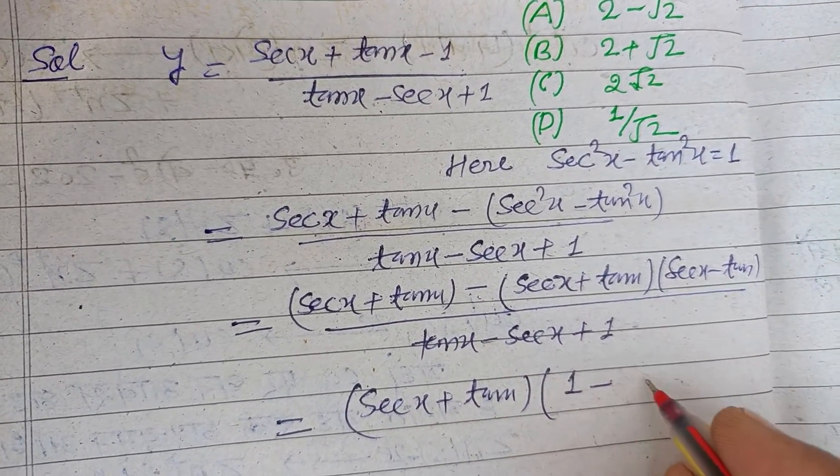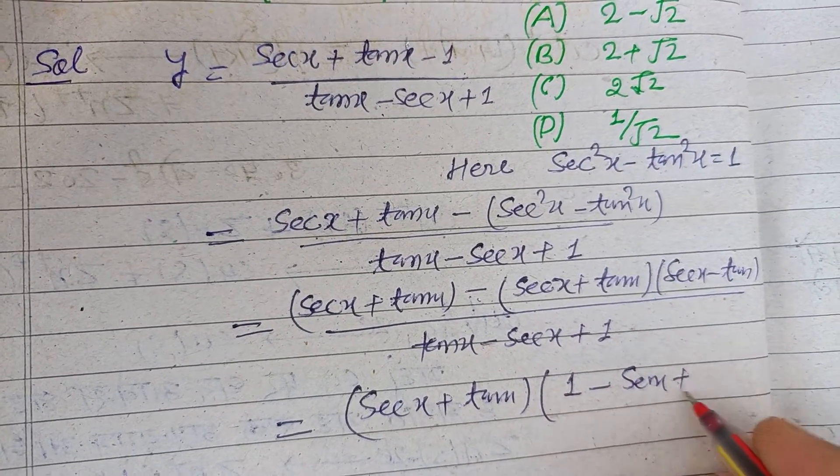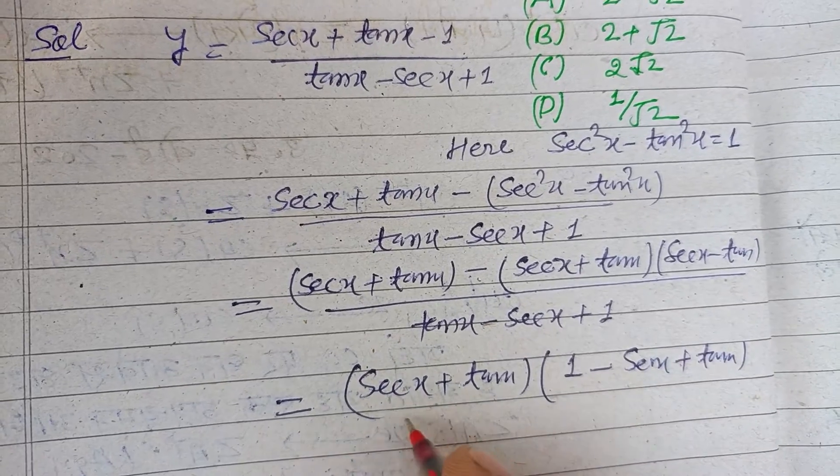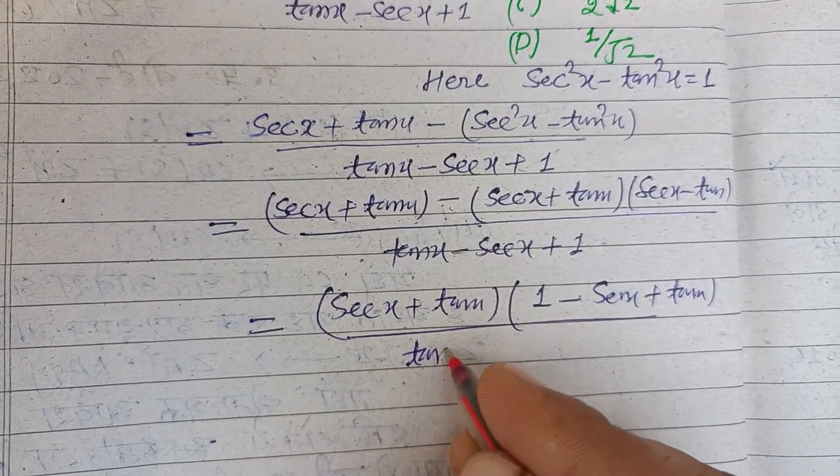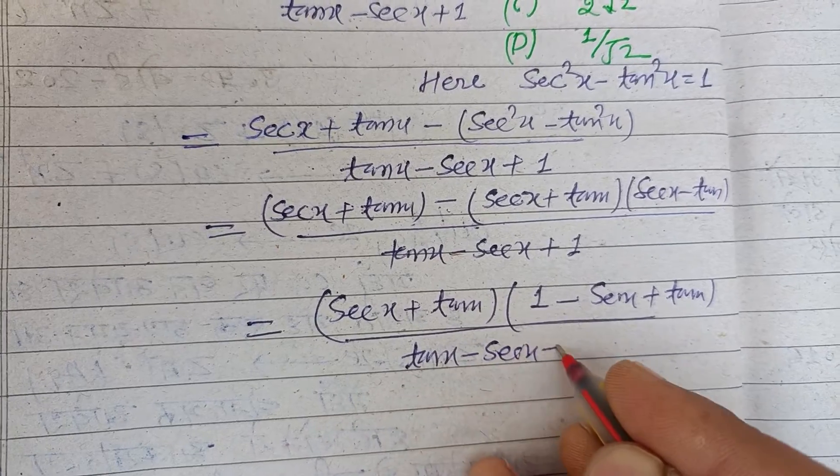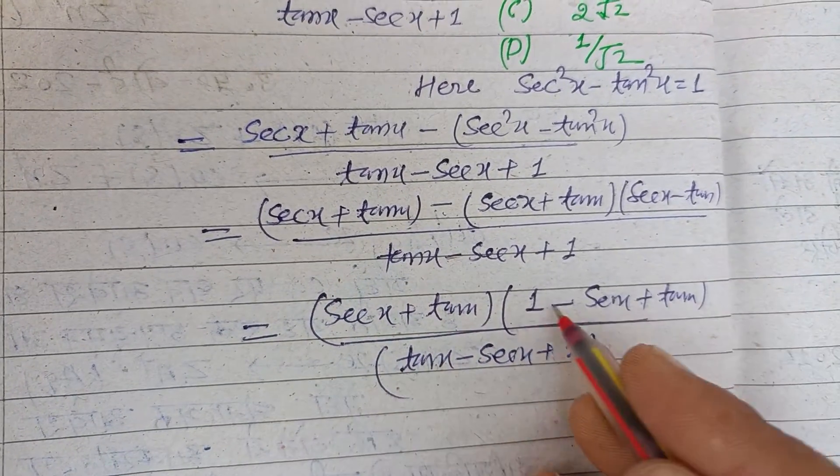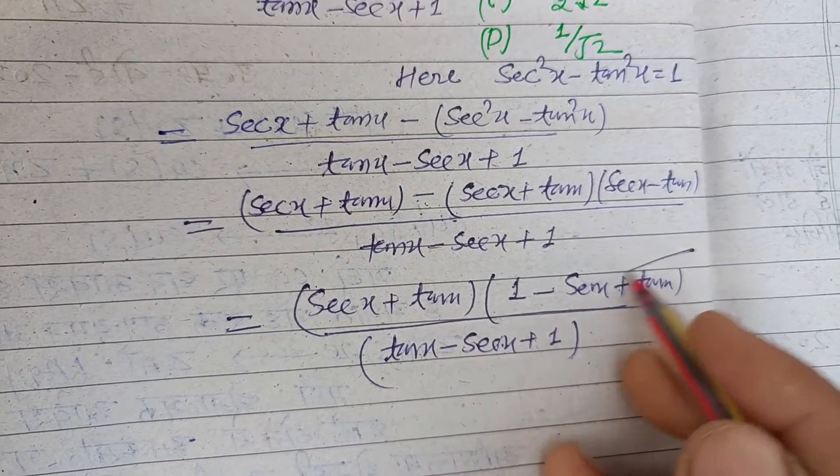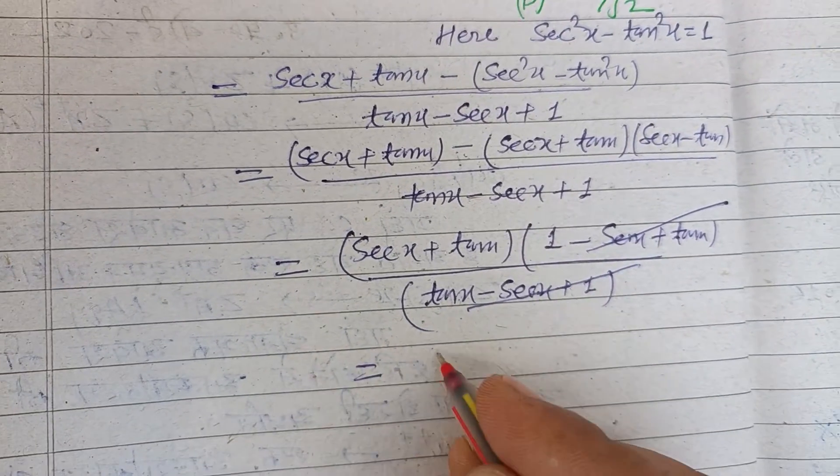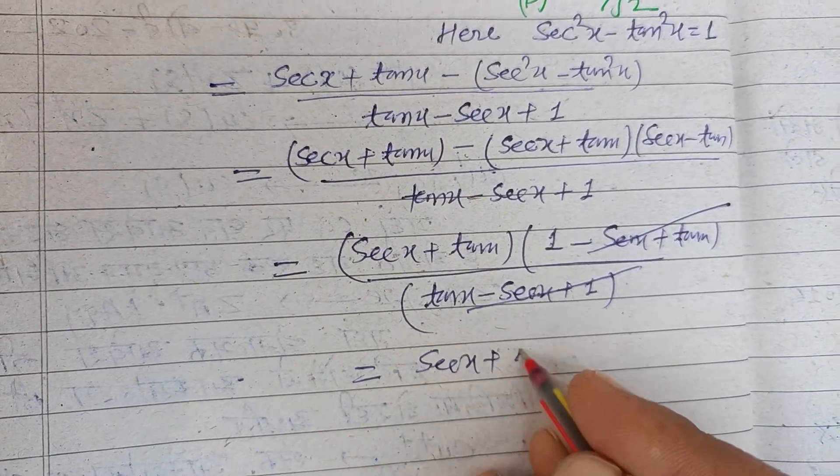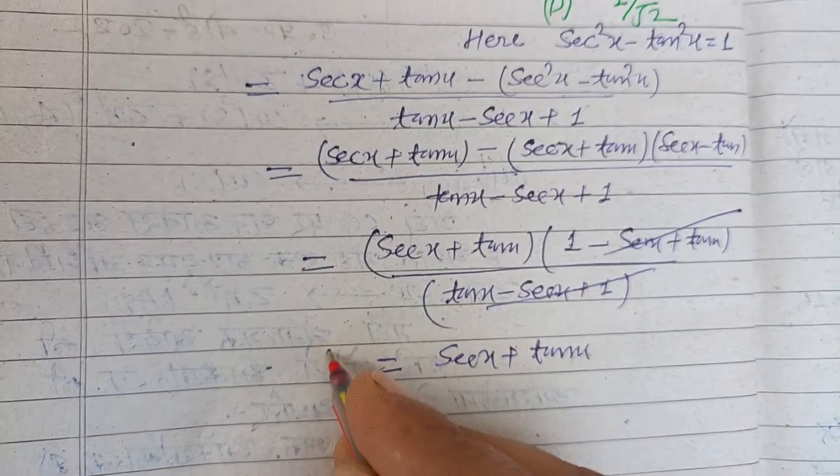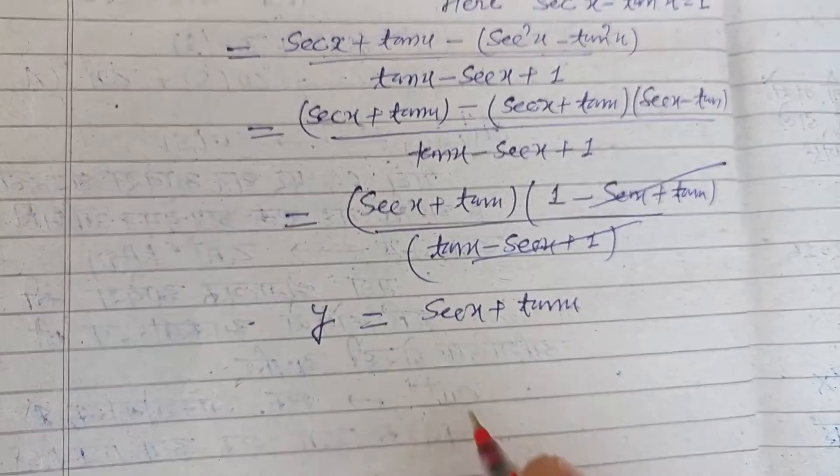This simplifies to (sec x + tan x)(1 - (sec x - tan x))/(tan x - sec x + 1). On simplification we get y = sec x + tan x.